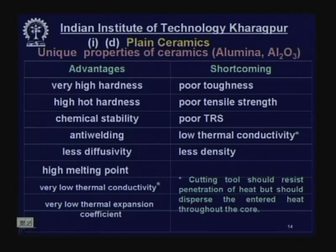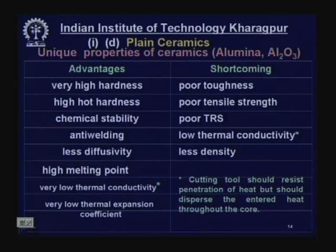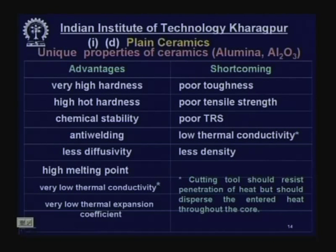Now, plain ceramics. Ceramic is a heat-resistive and refractory material. When we talk about ceramic as a cutting tool material, we mainly refer to alumina (Al₂O₃) and silicon nitride (Si₃N₄) — more popularly alumina. These materials have unique properties essential for cutting tools, such as very high hardness, which means abrasion resistance.